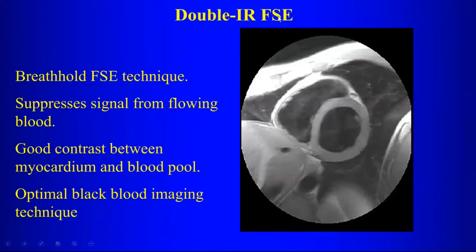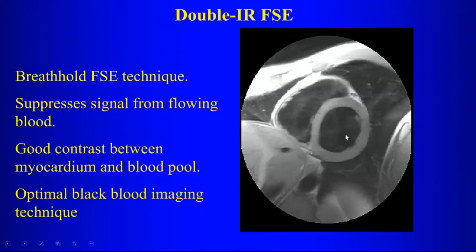Double inversion recovery fast spin echo sequences are breath hold fast spin echo techniques. We suppress the signal from flowing blood, get good contrast between the myocardium and the blood pool, and this is the optimal black blood imaging technique. You get very nice anatomic definition — a short axis view showing the left ventricle with the blood pool nicely suppressed and appearing black.